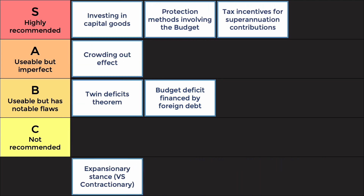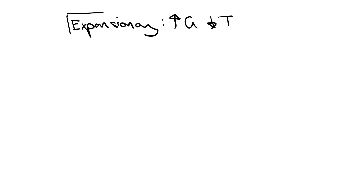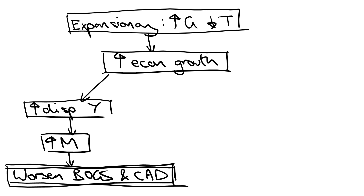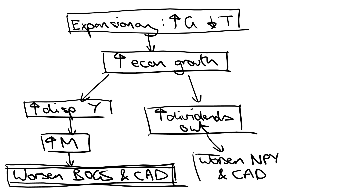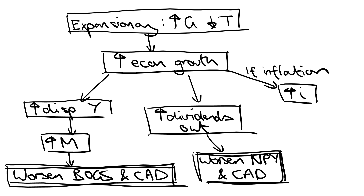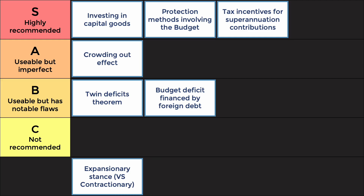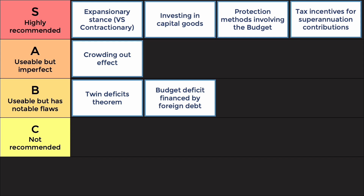The final S-tier point is that expansionary fiscal policy worsens the current account deficit. Increased disposable income leads to greater import spending, worsening the balance of goods and services and contributing to the current account deficit. Company profits also rise, leading to more dividend outflows and a worsened net primary income and CAD. An inflationary boom could also bring higher interest rates, attracting more foreign debt inflows and incurring more servicing costs, increasing net foreign liabilities and worsening the CAD. This is S-tier because it is simple to explain, there are multiple theoretical links, and there are clear stats linking import spending with higher economic growth and disposable incomes — such as the post-COVID recovery.